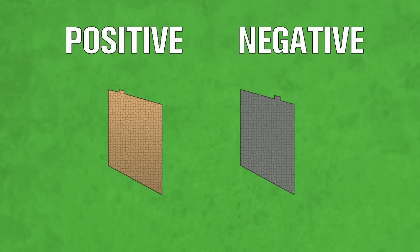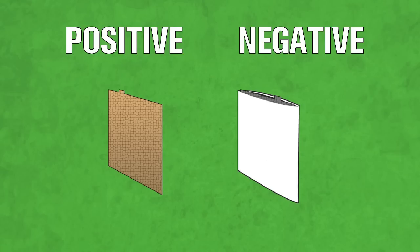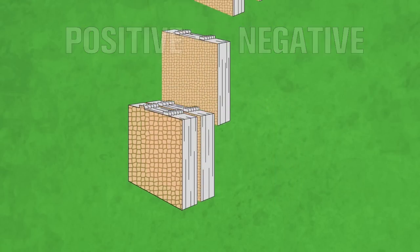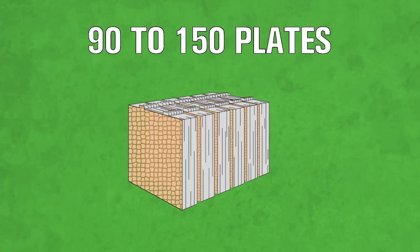Positive plates receive one paste, and negative plates receive a different kind of paste. Separators keep the opposite plates from touching. There can be as many as 90 to 150 plates going into one 12-volt battery.